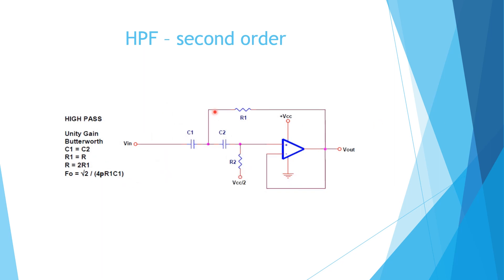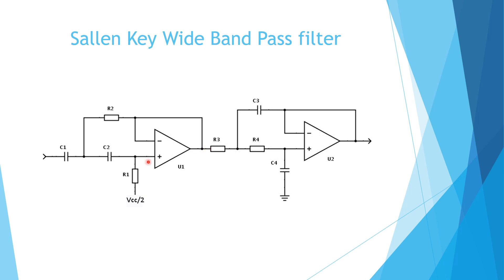The Sallen-Key high-pass filter is the inverse of the low-pass circuit. VCC/2 is applied for bias — without bias, clipping will occur at the output. The cutoff frequency is f0 = √2 / (4π·R1·C1). The Sallen-Key wide-band band-pass filter is formed by cascading a high-pass filter and a low-pass filter, where the cutoff frequency of the high-pass stage must be lower than the cutoff frequency of the low-pass stage.